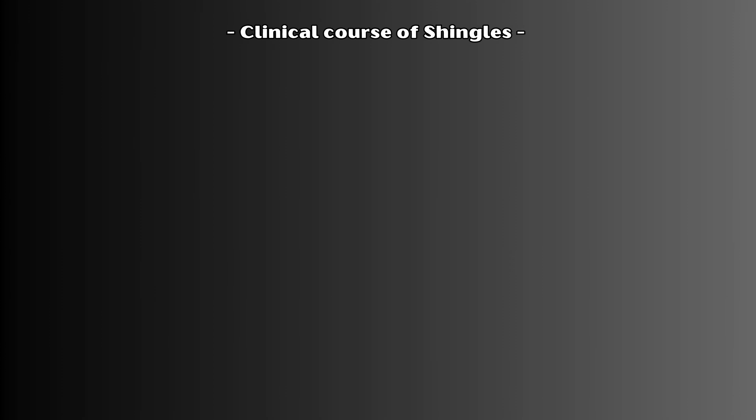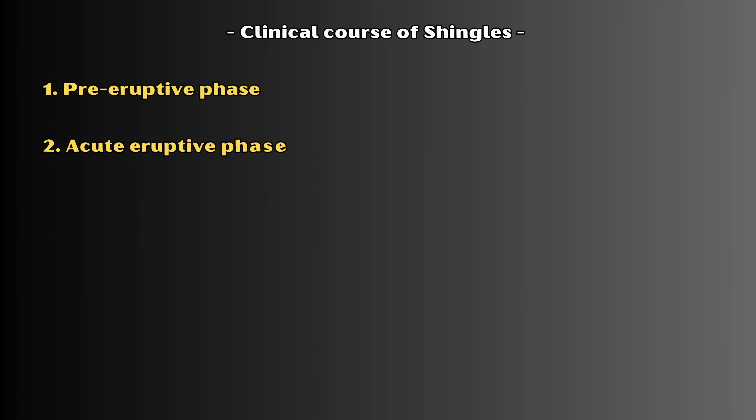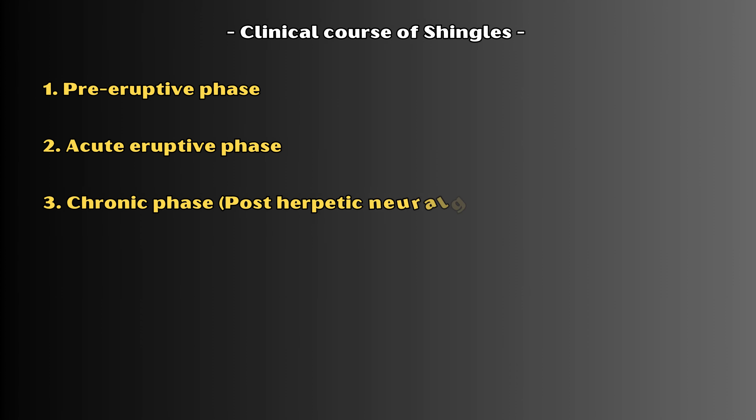The clinical course of shingles can be divided into three phases: the pre-eruptive phase, the acute eruptive phase, and the chronic phase, also known as postherpetic neuralgia.